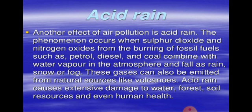Acid rain kills aquatic animals such as fish by making the water in ponds and lakes much more acidic, which is unsuitable for the survival of aquatic animals and plants. It also corrodes statues, buildings, historical monuments, and damages them slowly. Statues, buildings, and monuments made from marble or limestone are affected because the acid in acid rain reacts with the carbonates present in the marble and limestone, corroding or dissolving them slowly, causing them to crumble away.